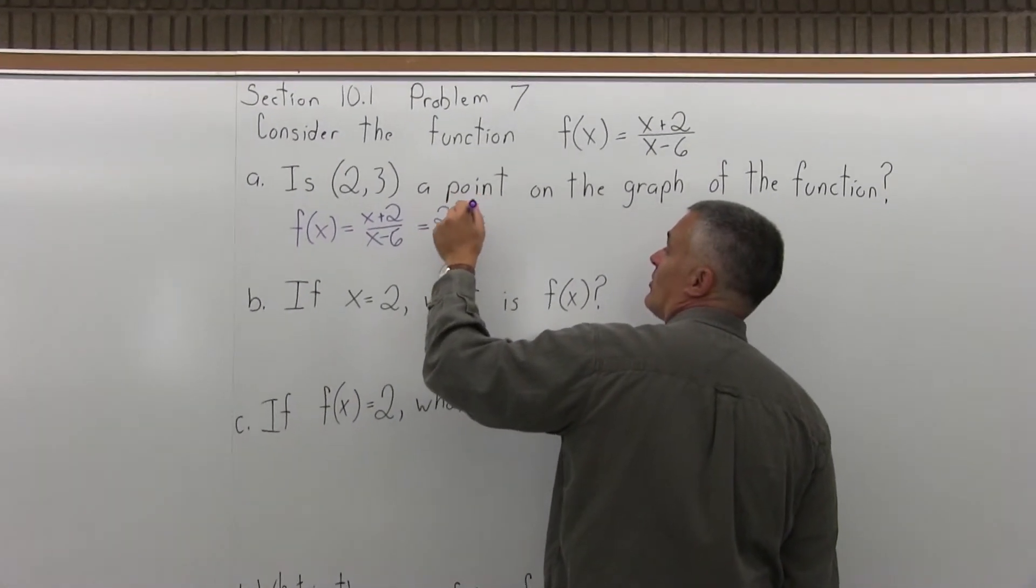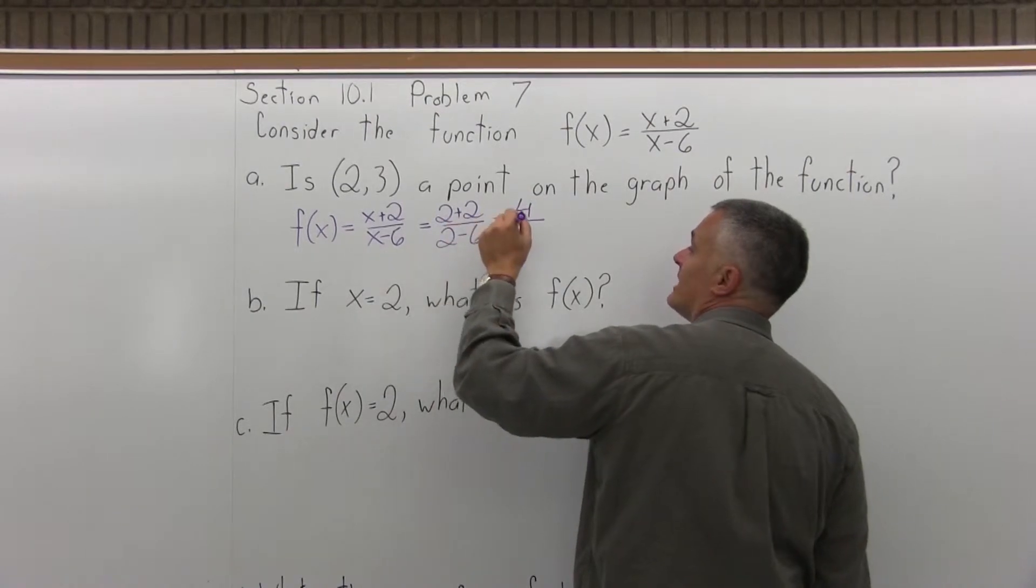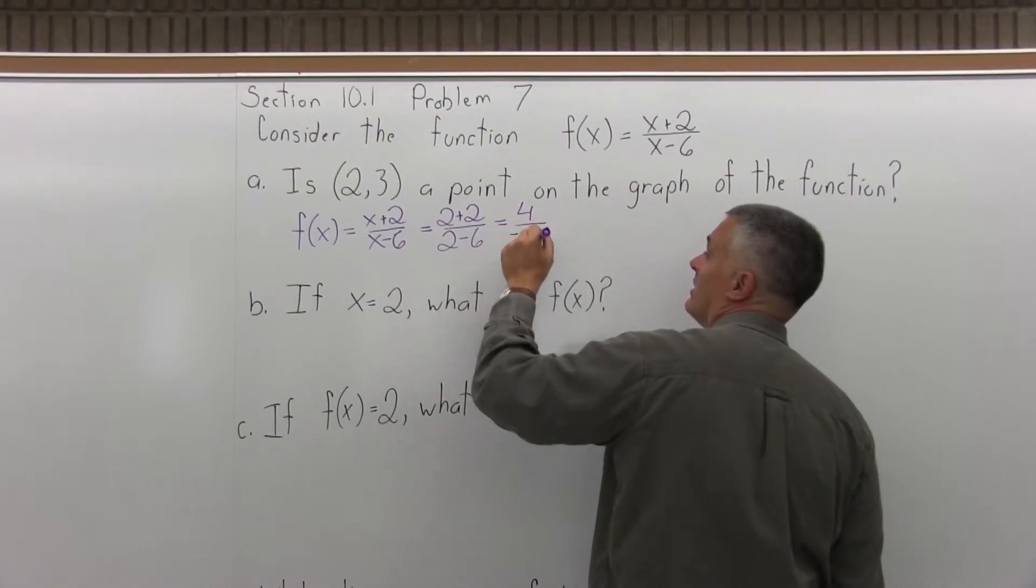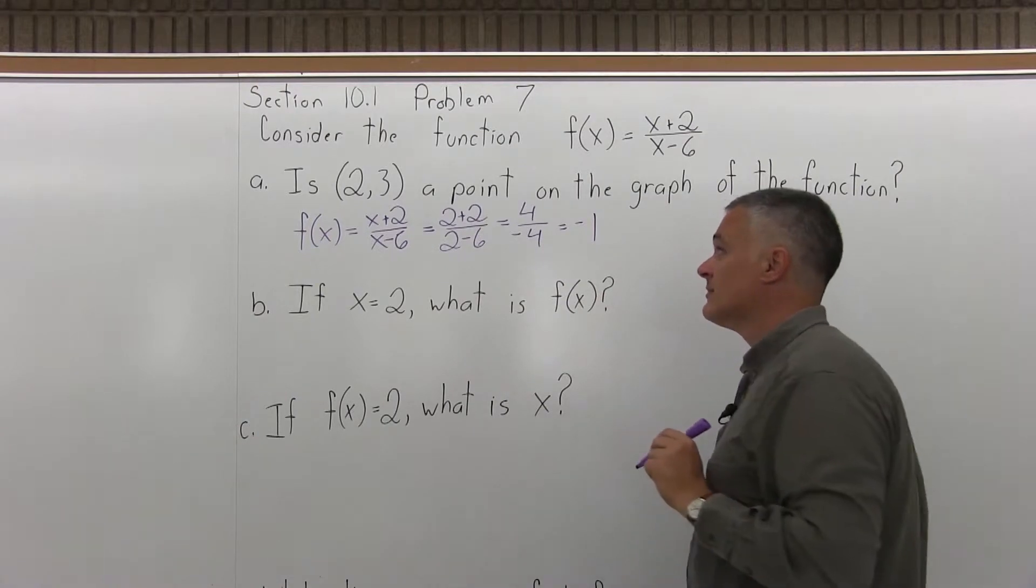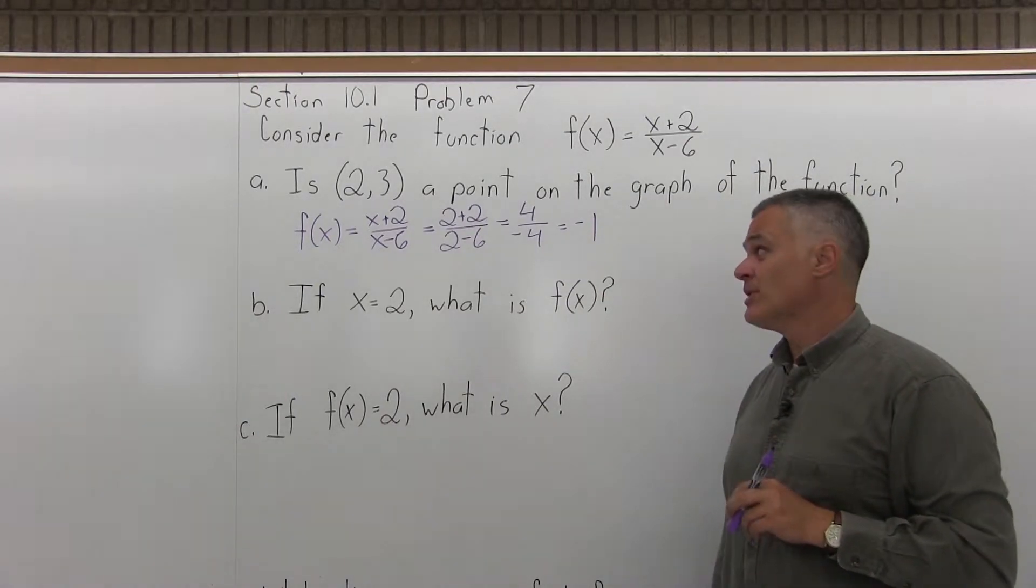And now in the numerator, 2 plus 2 is 4, and the denominator, 2 minus 6 is negative 4. I can reduce that to minus 1, but the thing is, I do not get out a 3.